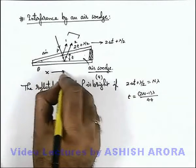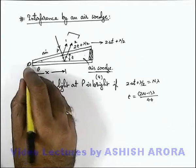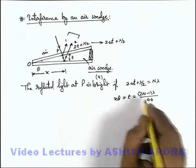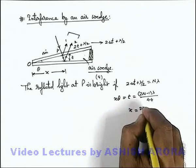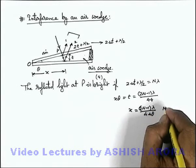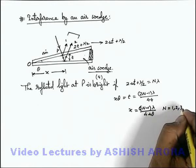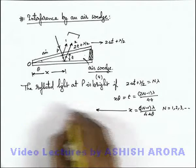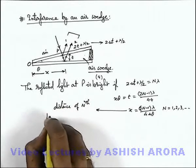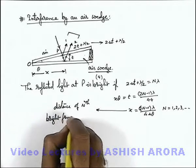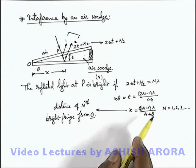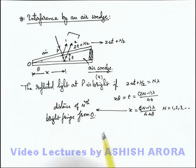If x is the distance of this point P from the wedge edge O, then t can be written as x theta. Like we have studied in the previous section, the value of x we are getting here is (2n - 1) lambda by 4 mu theta, where n is equal to 1, 2, 3, and so on. This x is the distance of the nth bright fringe from point O, and this is the nth bright fringe compared to the previous case when we were talking about a medium wedge which is denser than air.